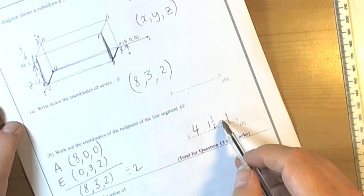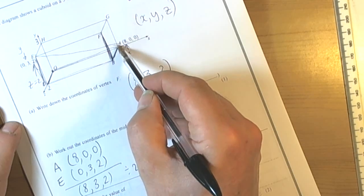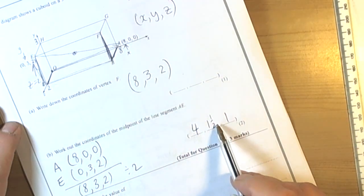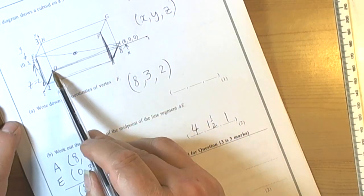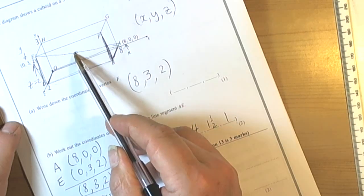So that will be the midpoint of the segment AE. So literally if we were going from A to E then the midpoint would be at 4, 1 and a half, 1. Which makes sense really, it's go half way along there, come half way along there, and then up half way.